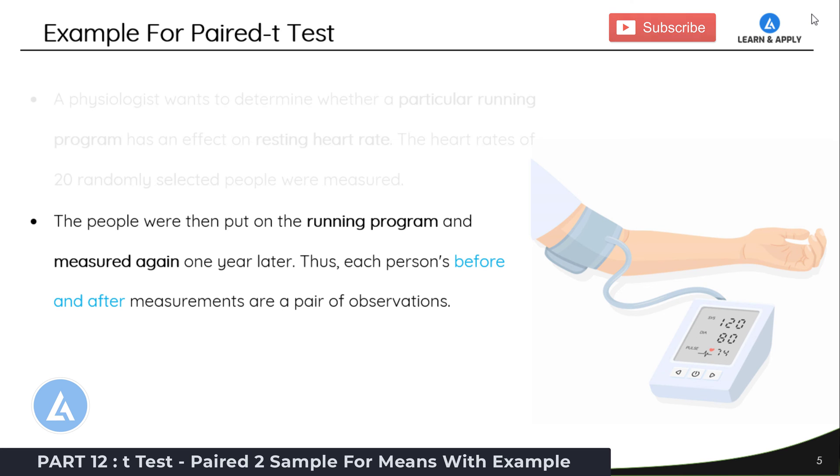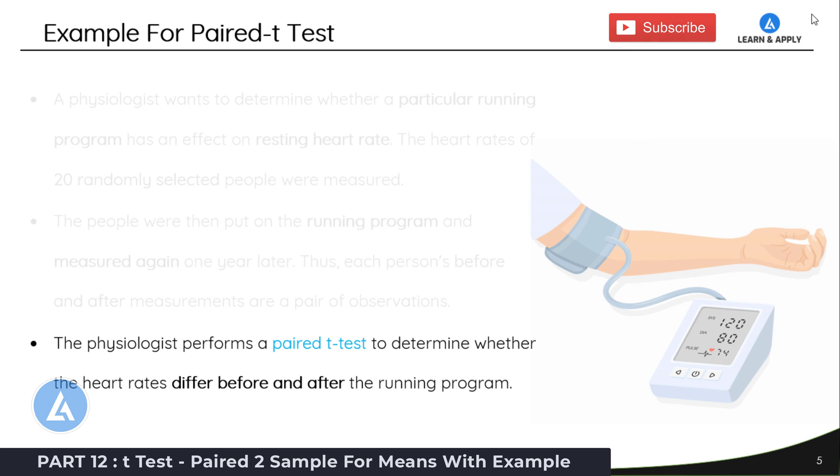And this is the most important requirement for the Paired t-Test. You must have the observations in pairs. The physiologist performs a Paired t-Test to determine whether the heart rates differ before and after the running program. Now let's go to this data and perform this Paired t-Test in Microsoft Excel.